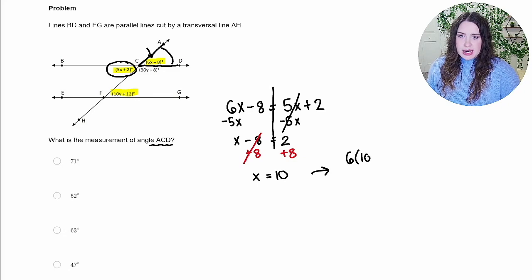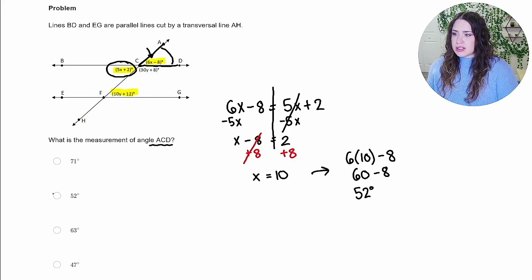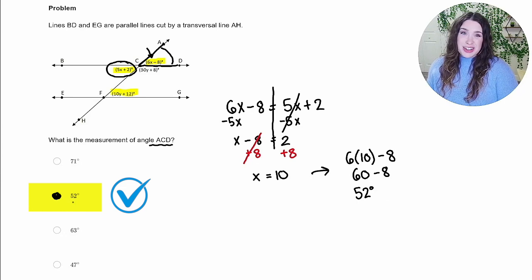6 times 10 minus 8 is going to get us our angle measure. 6 times 10 is 60 minus 8 is going to leave us with a 52 degree angle measure for angle ACD. So 52 is our correct answer.